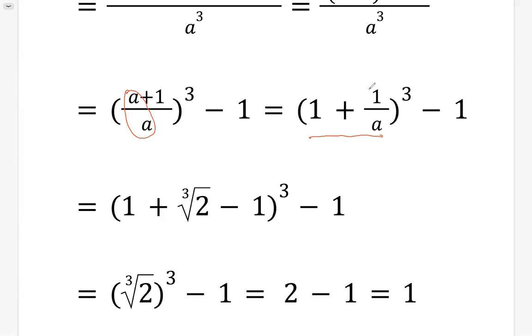Now we want to plug in 1 over A. Remember 1 over A is cubic root of 2 minus 1. We have plus 1 minus 1, simplified to be 0. Now it's much easier.